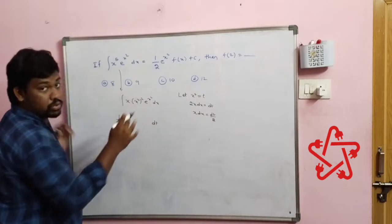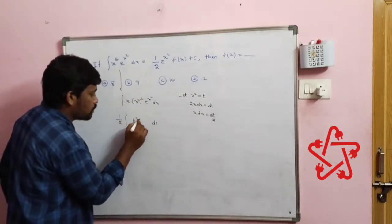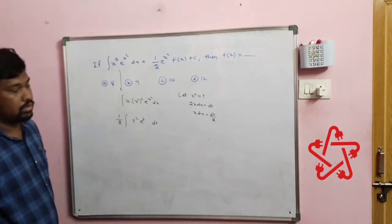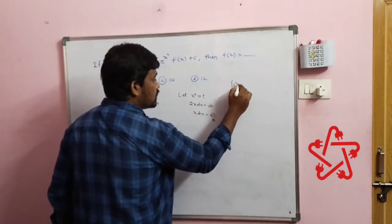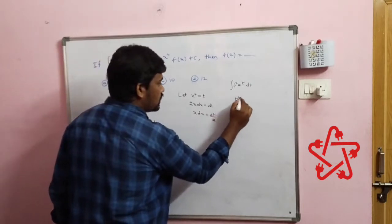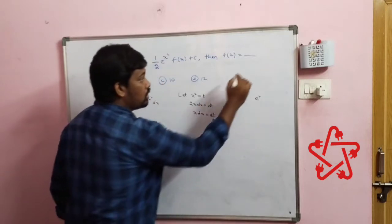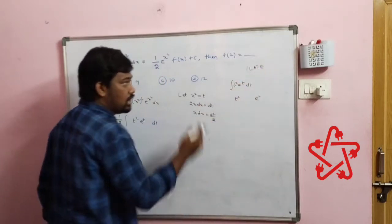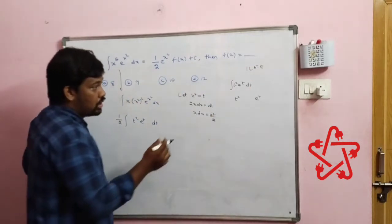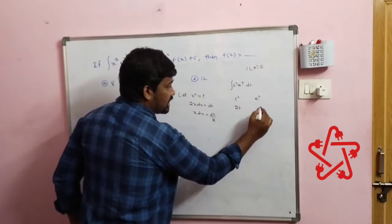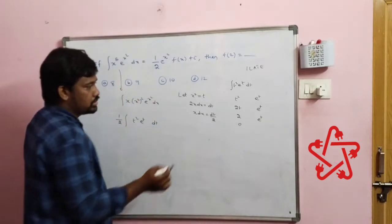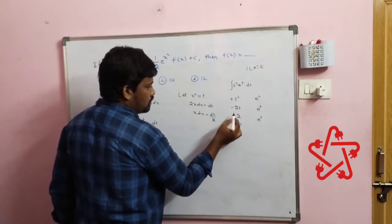Since x² = t, (x²)² becomes t². And eˣ² becomes eᵗ. So we need to integrate (1/2) · t² · eᵗ dt. We will apply Bernoulli's rule — taking algebraic terms first, then exponential terms. Differentiate t²: gives 2t; integrate eᵗ: stays eᵗ.